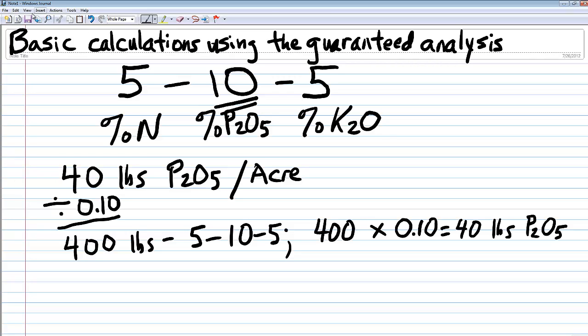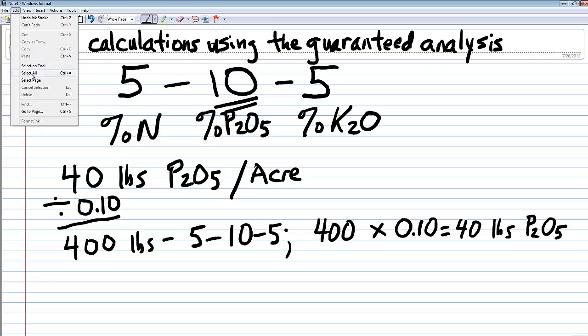Now, let's clear the screen and let's do a little more work with this calculation. We know that we want 400 pounds of 5-10-5 per acre. That's going to deliver our targeted goal of 40 pounds of phosphate per acre. How much will we also be applying nitrogen and potash?